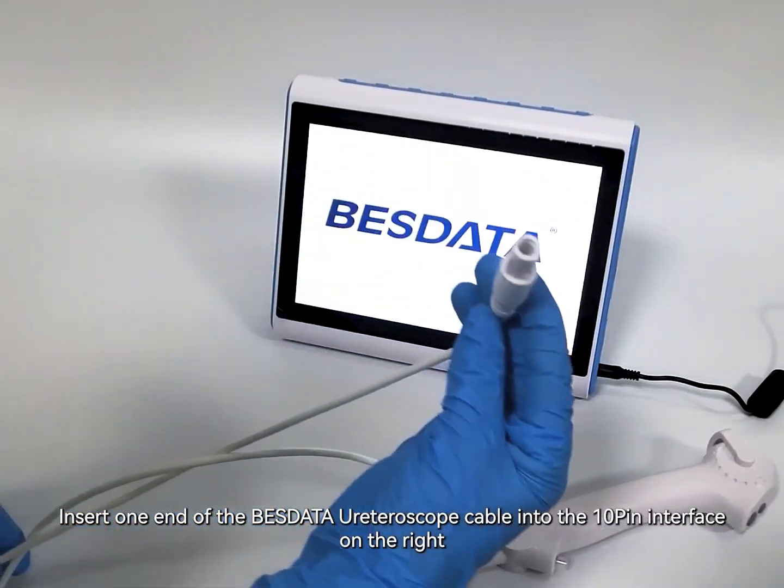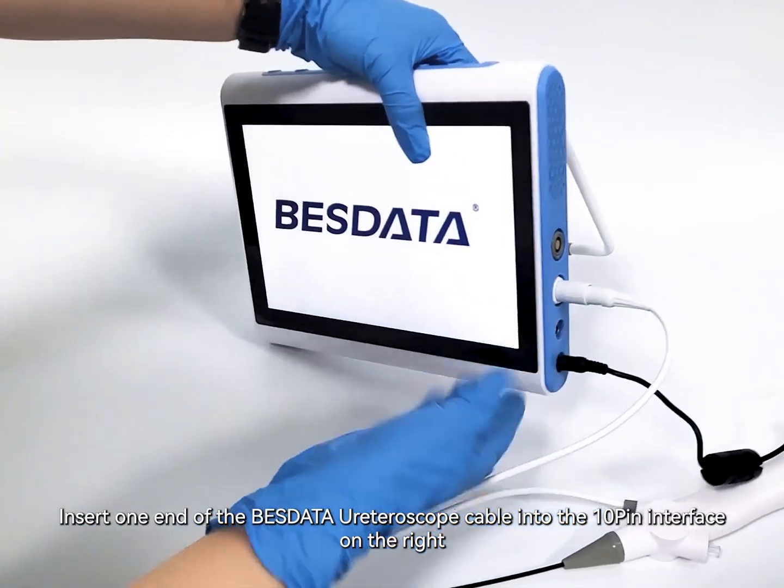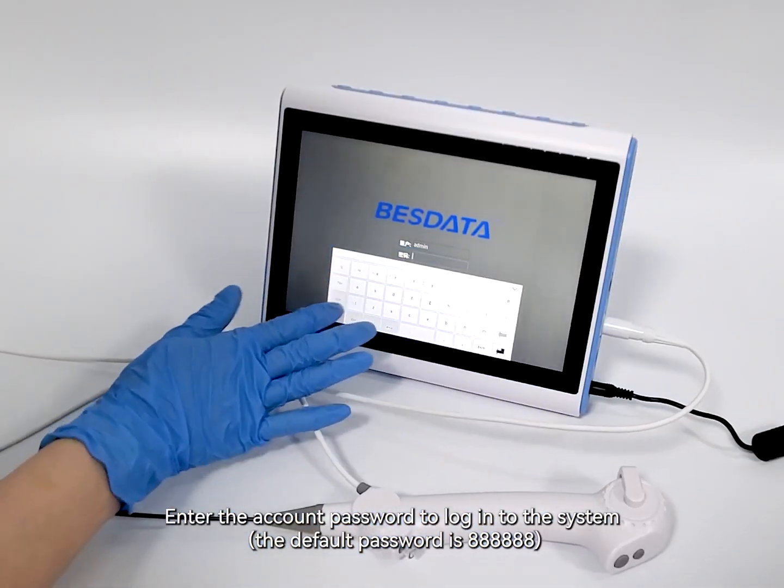Insert one end of the Bistada ureteroscope cable into the 10-pin interface on the right. Enter the account password to log into the system.